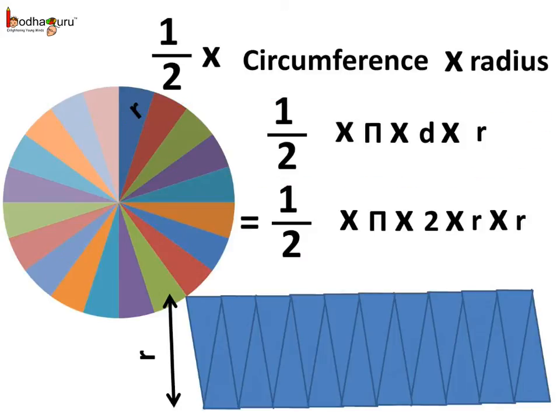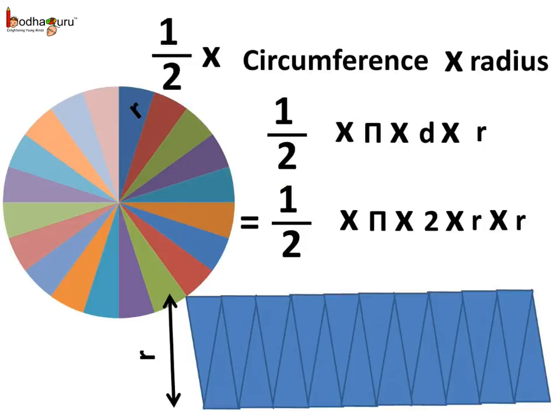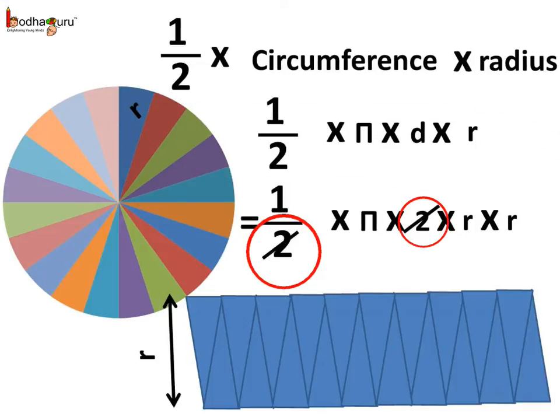Now, D is equal to 2R. So, 1/2 multiplied by π multiplied by 2R multiplied by R. Now, we can cancel 2 from both the numerator and the denominator.